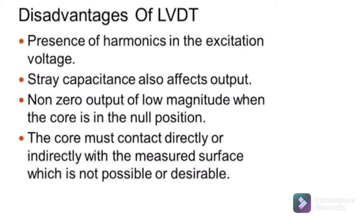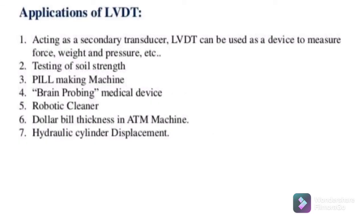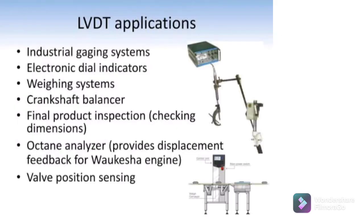Now we will talk about some applications of LVDT. The first application is that LVDT is used to measure physical quantities such as force, tension, pressure, weight, etc. These quantities are first converted into displacement by the use of a primary transducer, and then converted into the corresponding electrical voltage signal. The second application is that it is mostly used in industries such as servo mechanisms. The third application is that it is also used in industrial automation, aircraft, turbines, satellites, hydraulics, etc.